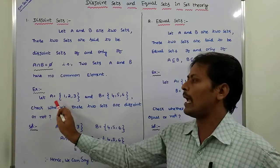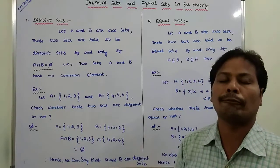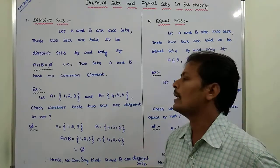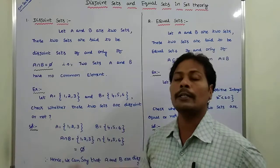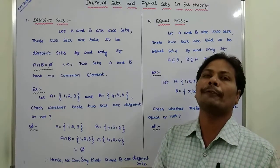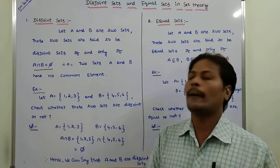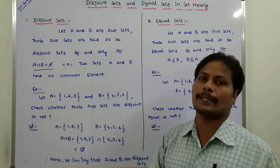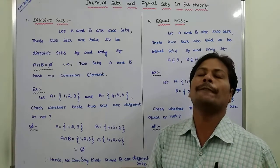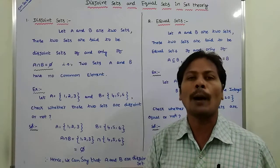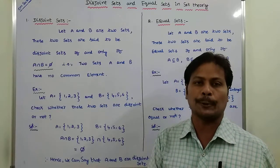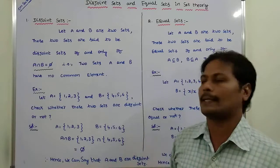For example, let A = {1, 2, 3} and B = {4, 5, 6}. Check whether these two sets are disjoint sets or not. First, we have to perform the intersection operation between these two sets. After performing the intersection, if these two sets have no common element, then we can say that they are disjoint sets.